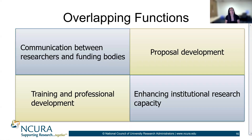We're back to that question of what are the overlapping functions between RA and RD. This represents a critical intersection where collaboration can significantly enhance institutional research capacity. These are shared spaces and are not just areas of operational overlap — they're strategic touch points where alignment can reduce friction, improve efficiency, and amplify support for researchers.